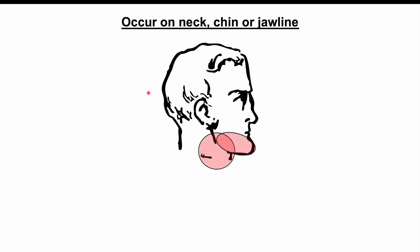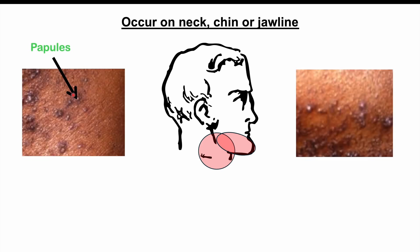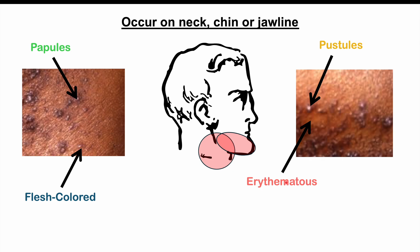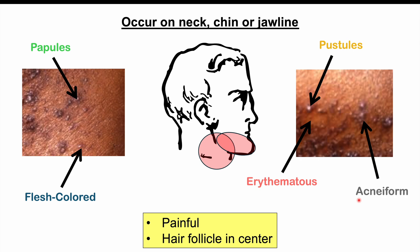Pseudofolliculitis barbae presents on the neck, chin, or jawline. It can appear as papules — raised skin lesions usually less than 10 millimeters in diameter — or pustules, which are pus-filled raised skin lesions. They can be flesh-colored, erythematous (reddened), or darkened in appearance, and can look acneiform, resembling acne. Some patients find them painful or tender. If you look closely, the hair follicle often resides in the center of each skin lesion.